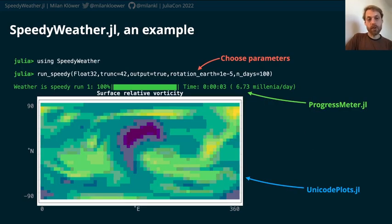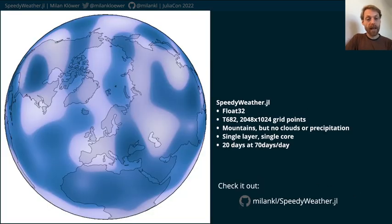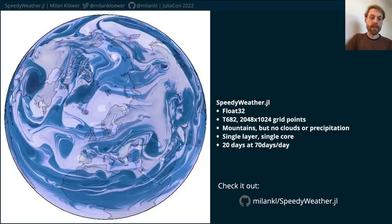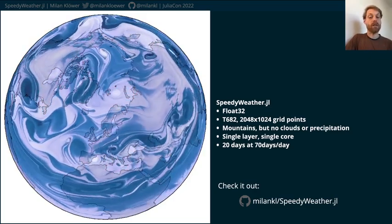As an example of using SpeedyWeather, the main interface is the run_speedy function, where you can choose any parameters you want. We use ProgressMeter.jl to show directly the speed at which the model is running, which we count as days per day, years per day, or millennia per day. UnicodePlots.jl is used to immediately show a quick plot of the final result so we can see if it makes sense or if the model blew up. And here's a demo video of SpeedyWeather.jl running in single precision at about 2000 by 1000 grid points — we already have mountains, though there's not yet any clouds or precipitation. At the moment it's simulating a single layer on a single core, but we're already getting reasonable speeds and I'm looking forward to porting this to GPUs. If anyone wants to contribute, you are more than welcome — otherwise check it out on GitHub. Thanks for listening.